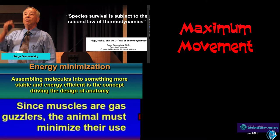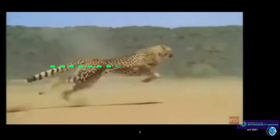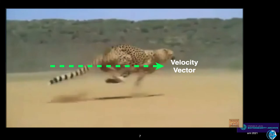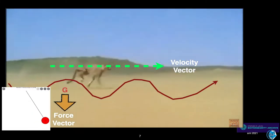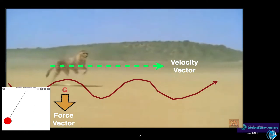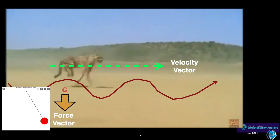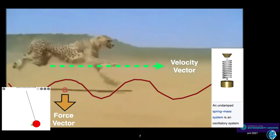This boils down to getting maximum movement while using minimal effort. Movement has two components — horizontal velocity and a vertical force vector, usually related to gravity. Together they produce motions that resemble a sine wave and the oscillations of a pendulum or spring.